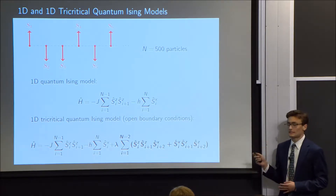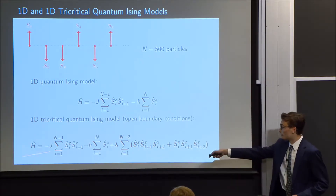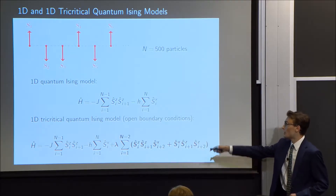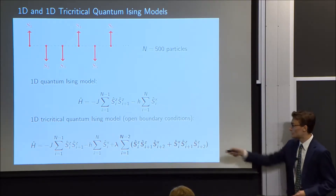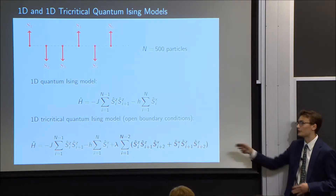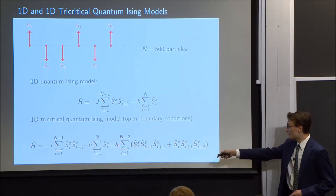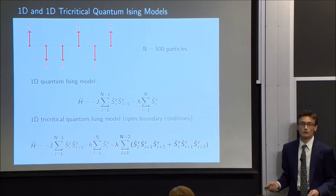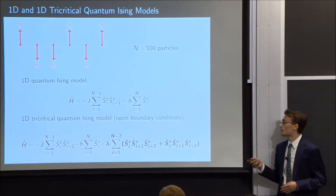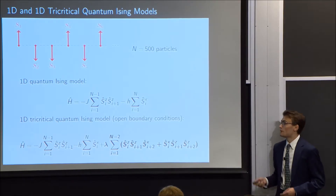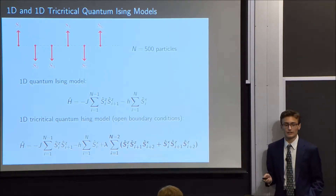For the 1D tricritical quantum Ising model, the first two terms of its Hamiltonian are the same as the 1D quantum Ising model, but there's also an additional three-spin coupling term. The coefficient for that term, lambda, is what's known as an irrelevant deformation, which means that if we were to vary lambda around zero, we wouldn't expect the fundamental properties of the system to change drastically.